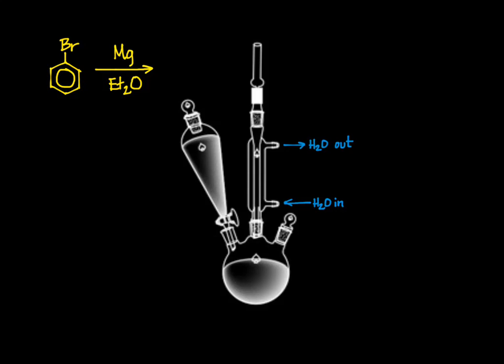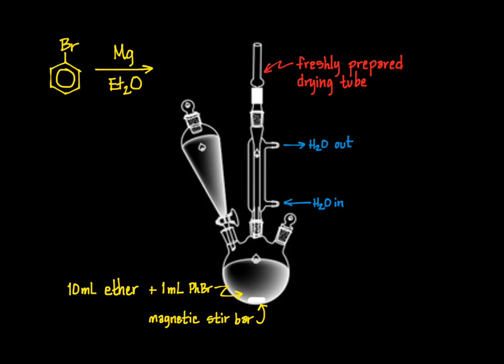The formation of the Grignard reagent is sufficiently exothermic that the ether will boil, so the reflux condenser needs to be hooked up to cooling water in the usual fashion. As I described earlier, the drying tube needs to be freshly prepared. A magnetic stir bar is then added to the flask, and it's positioned over a stirrer. Now the reagents are introduced. Because the Grignard formation is so highly exothermic, mixing all of the bromobenzene with all of the magnesium could result in a runaway reaction. We can prevent this by introducing only a portion of the bromobenzene to start with, and then adding the remainder slowly later on. So you'll begin by adding 10 milliliters of anhydrous ether and about a milliliter of the bromobenzene to the flask. The remaining bromobenzene you'll dissolve in 10 more milliliters of anhydrous ether and place in the addition funnel.